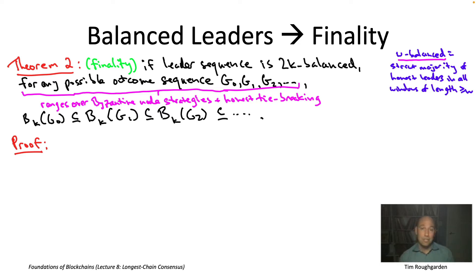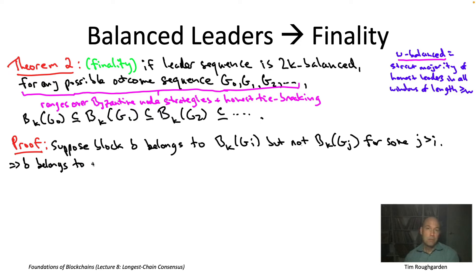So like the proof of theorem one, let's proceed by contradiction. Let's assume that it actually is possible that some block gets rolled back, meaning it is sort of confirmed, i.e. belongs to b sub k of g i for some graph g i, and then for some later graph g sub j, all of a sudden, it's not part of b sub k of g sub j. So what does this imply? Well, by virtue of being a member of b sub k of g i, it must be the case that little b actually belongs to every single longest chain. By definition, this says it belongs to the common prefix of every longest chain, so in particular, it belongs to every longest chain in g sub i.